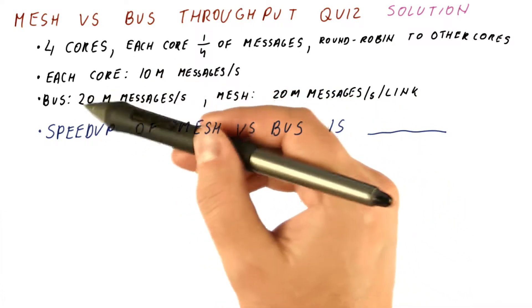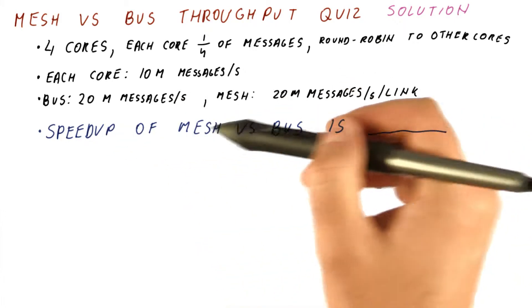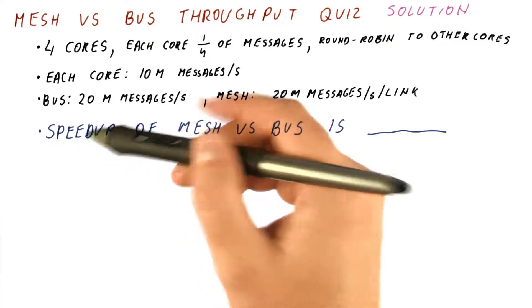We are getting what the bus can do and what the link in a mesh can do. And now we are asked how much faster is it on the bus versus on the mesh.